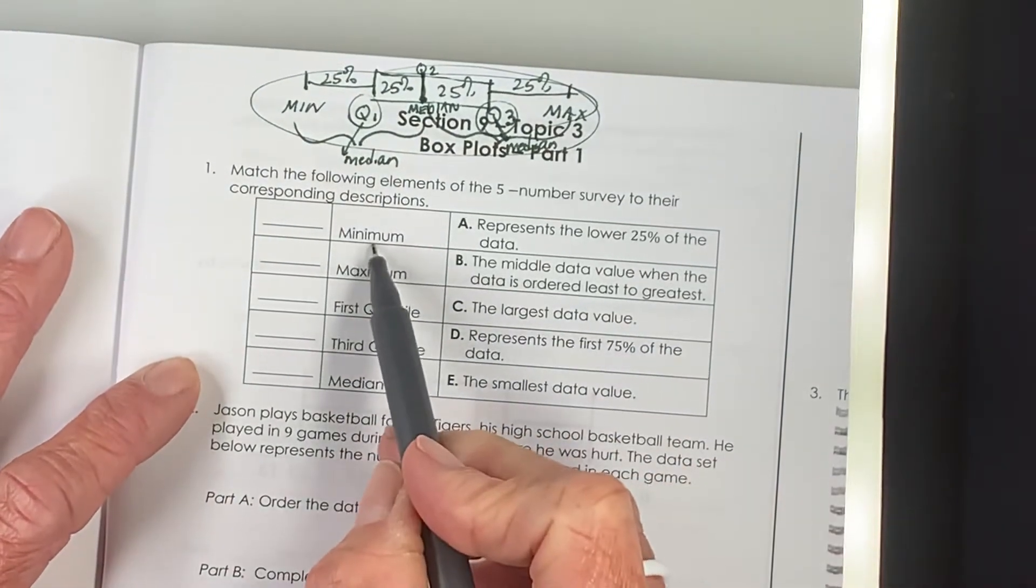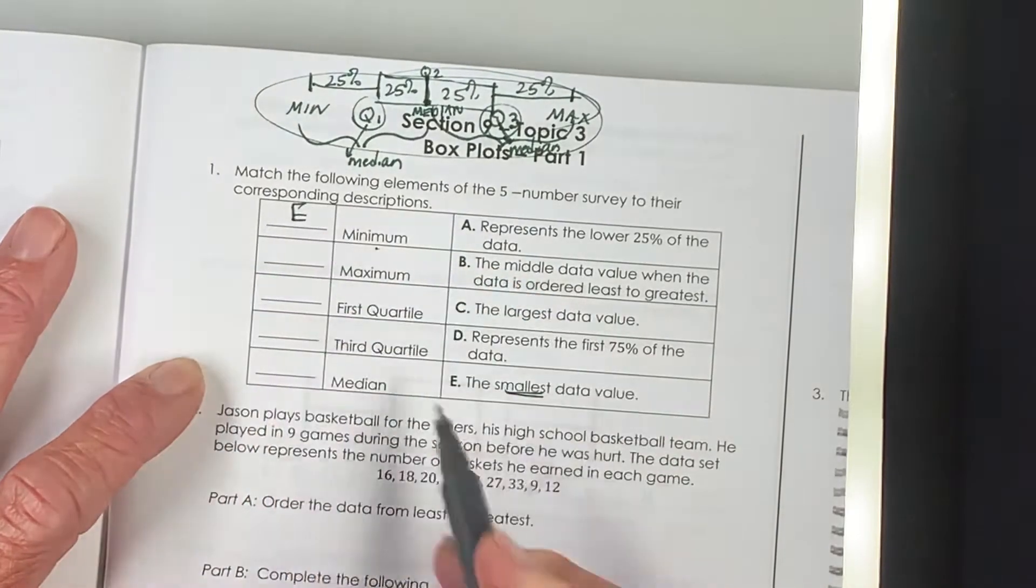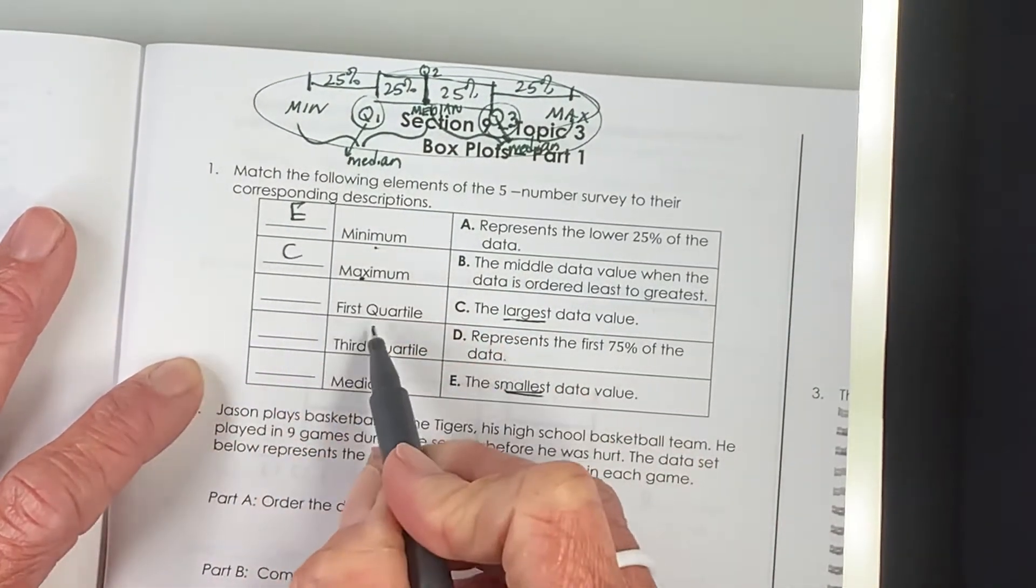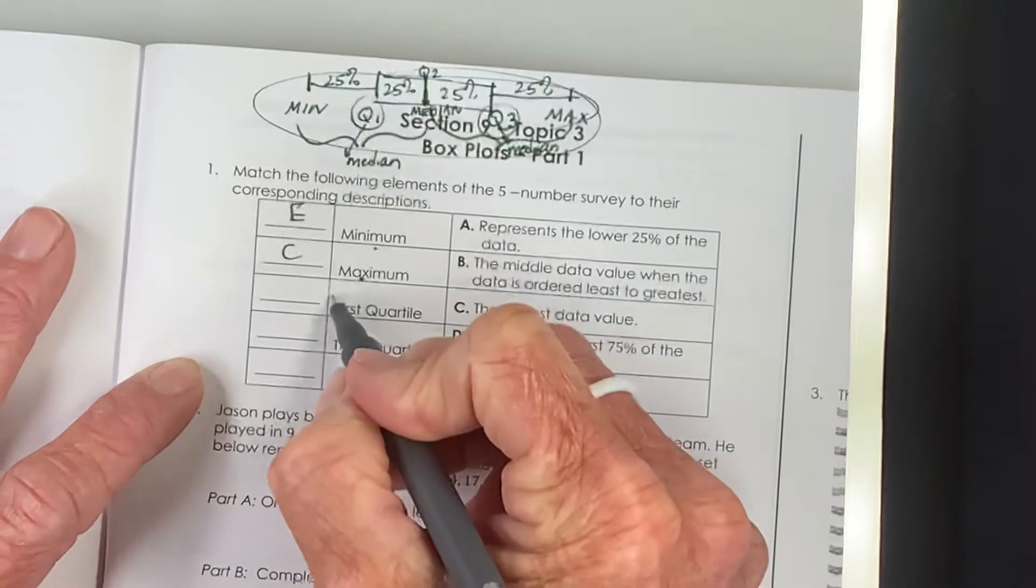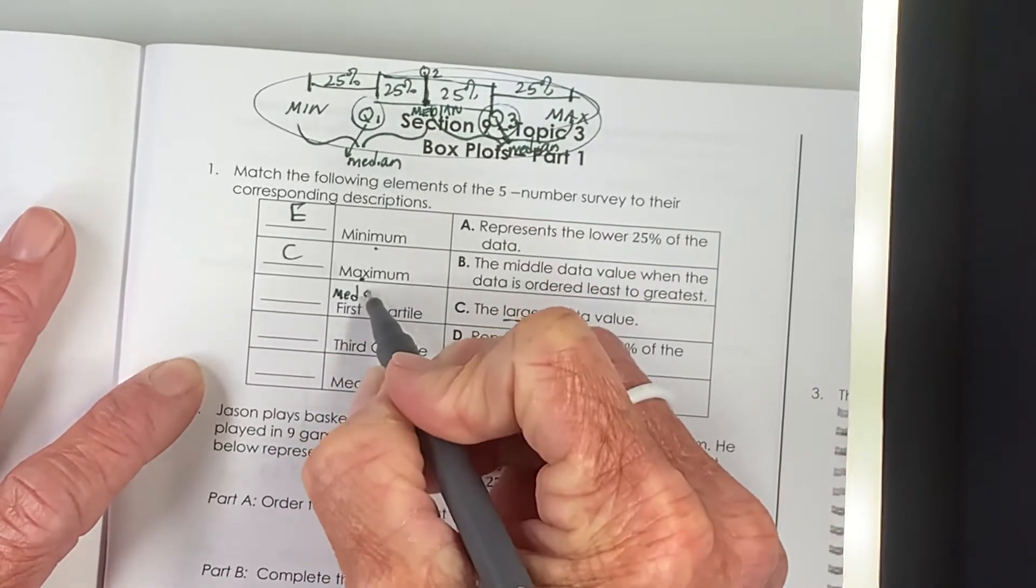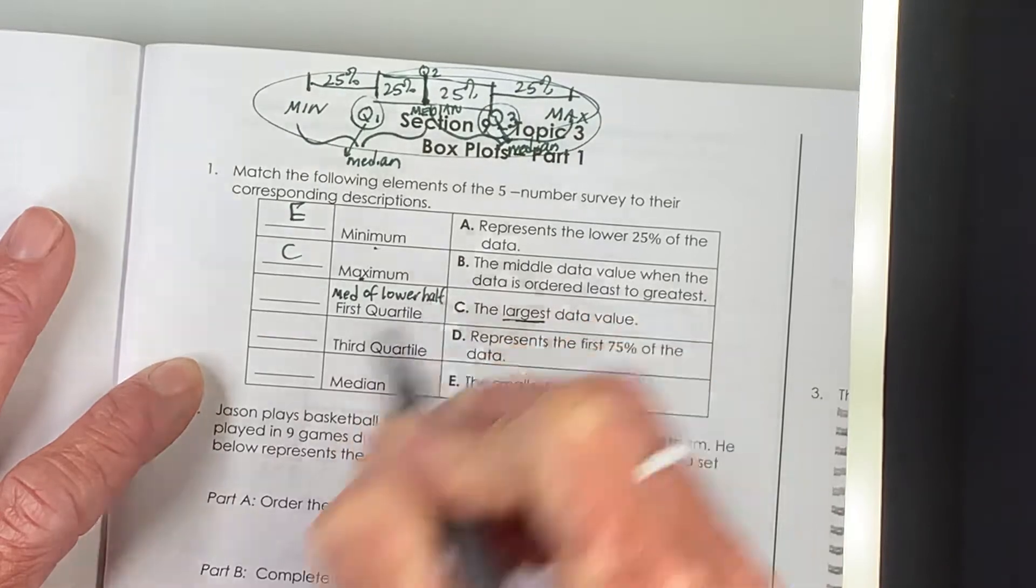So the minimum is the smallest value in the data set. Of course the maximum is the largest and that's here at C. The first quartile, Q1, is the median of the lower half of the data.